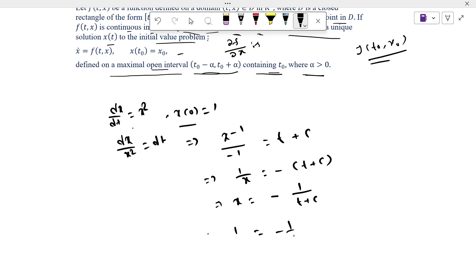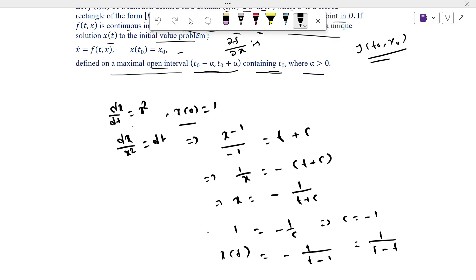This is the solution. What is given is initial condition x(0) equal to 1. Putting this we get 1 equal to -1/c, so basically we get c equal to -1. So we get the solution x(t) equal to 1/(1 minus t).